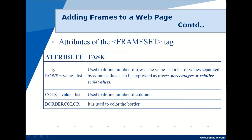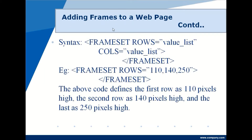The attributes of the frameset tag include: rows, which is used to divide the window horizontally into different frames — the value list is a list of values separated by commas, which can be expressed as pixels, percentages, or relative scale values. The cols attribute is used to divide the window vertically into columns. The bordercolor attribute specifies the color of the border of every frame.